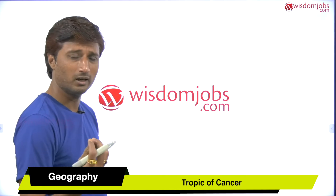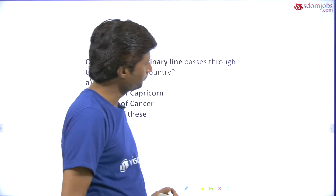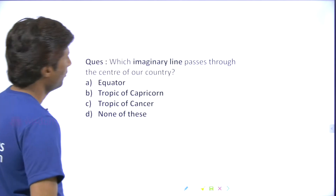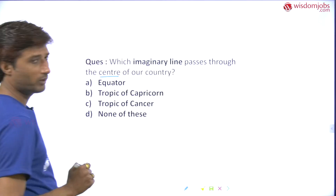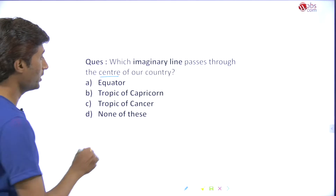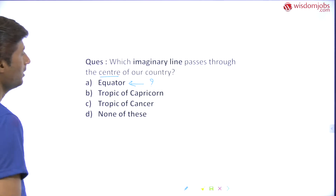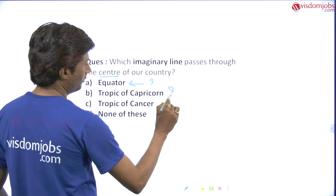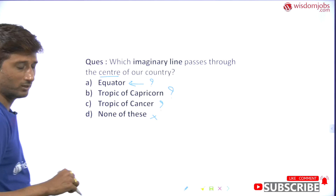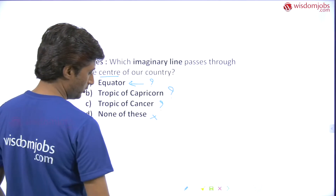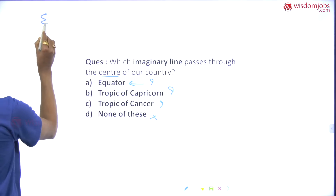As an Indian, you should have some basic idea about India. So let's move further. Which imaginary line passes through the center of our country, India? Is it the equator? Is it the Tropic of Capricorn? Is it the Tropic of Cancer, or none of these? Let me show you — this is our India.